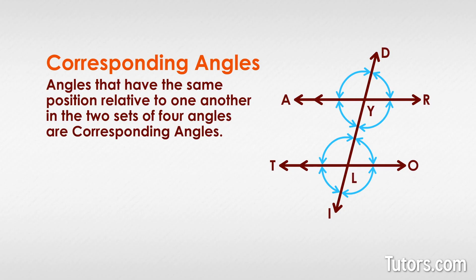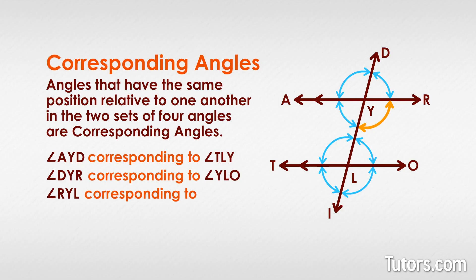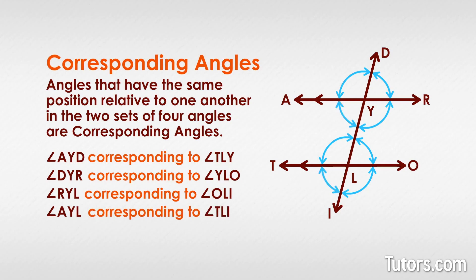When the corresponding angles are on parallel lines, they are congruent. Our transversal and parallel lines create four pairs of corresponding angles: angle A-Y-D corresponding to angle T-L-Y, angle D-Y-R corresponding to angle Y-L-O, angle R-Y-L corresponding to angle O-L-I, and angle A-Y-L corresponding to angle T-L-I. In all cases, since line A-R and line T-O are parallel, their corresponding angles are congruent.